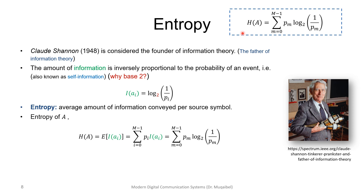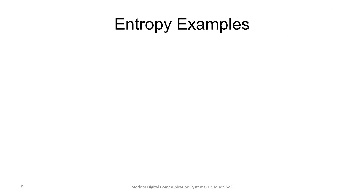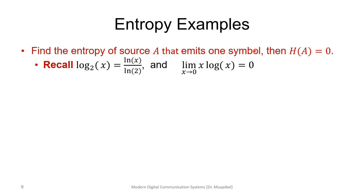The entropy unit is bits when using log base 2. If you use the natural logarithm (ln) instead, the unit is nats. Entropy is a measure of uncertainty — the higher the entropy, the higher the uncertainty of the source. If a source emits only one symbol, the entropy is zero, because there is no uncertainty and hence no information. This can be shown using the identity that p · log(1/p) approaches zero as p approaches one.